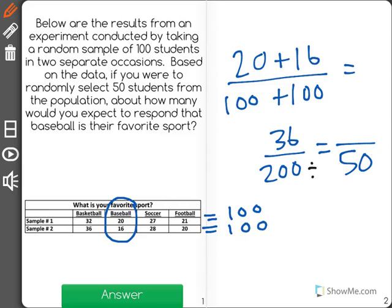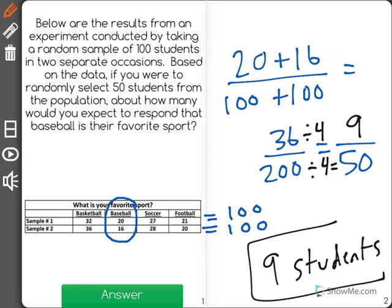To go from 200 to 50, I had to divide by 4. So I'll do the same on top. 36 divided by 4 is equal to 9, which shows me that if I were to randomly select 50 students, 9 students would most likely say that baseball is their favorite sport.